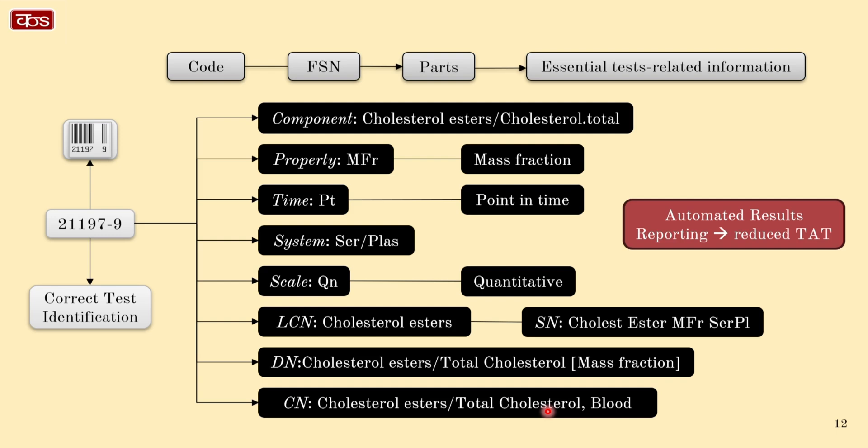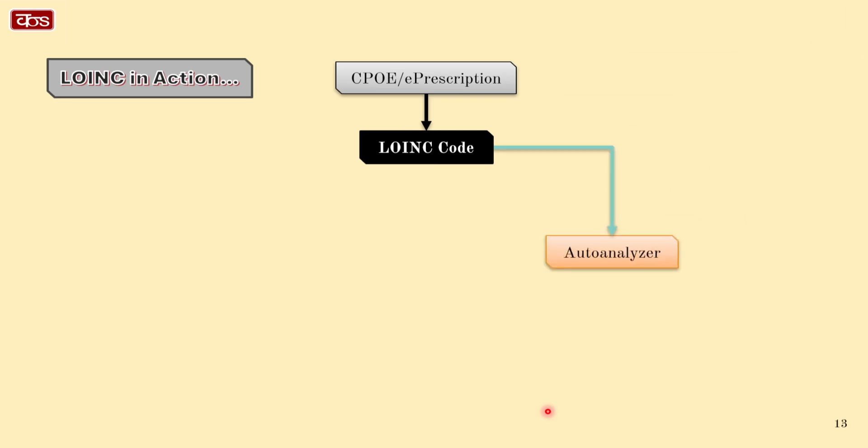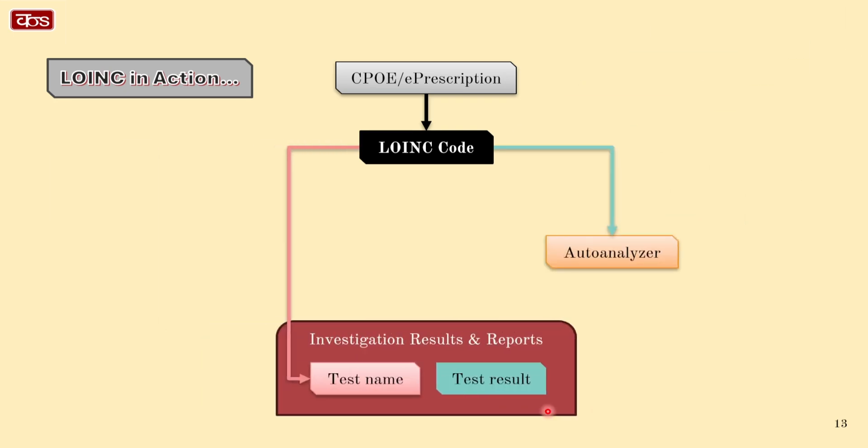So how does LOINC work in practice? Let us try visualizing this by taking a specific use case as an example. When a doctor orders a blood test for a patient, it is coded using LOINC. The lab tests the same sample using an auto analyzer. The test name comes from the information system and the test results from the auto analyzer. Since both use the same LOINC code, any healthcare provider can interpret the data accurately, no matter where they are.